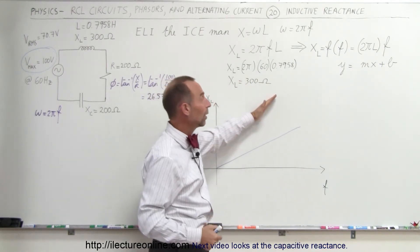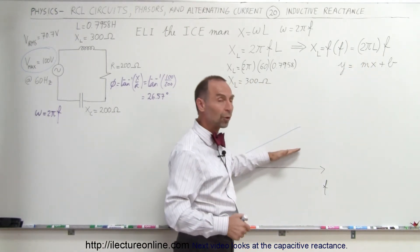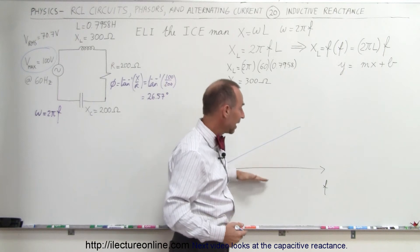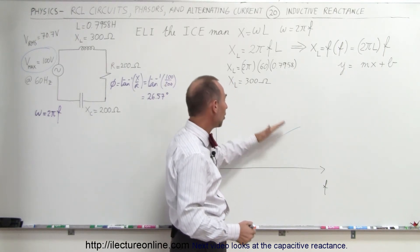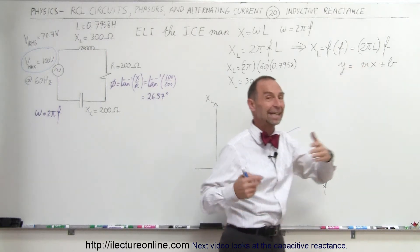And if L is a smaller number, then it's not as steep, and of course the reactance doesn't go up as high as a function of frequency. So the slope is simply determined by the size of the inductor in the circuit.